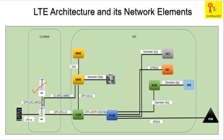For MME selection, the eNodeB determines which MME serves the UE during the attach procedure, or when the UE is served by a different MME in a different network. It establishes a route toward an MME based on information provided by the UE. When there is no routing information available, MME selection through the eNodeB helps provide that information to the UE.